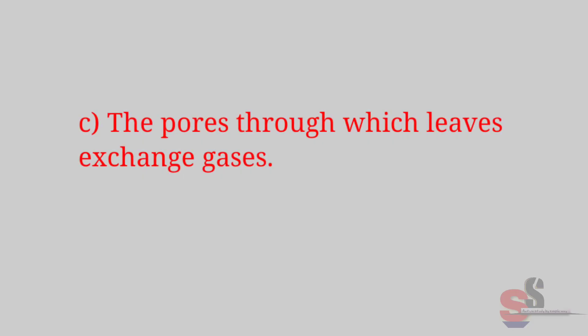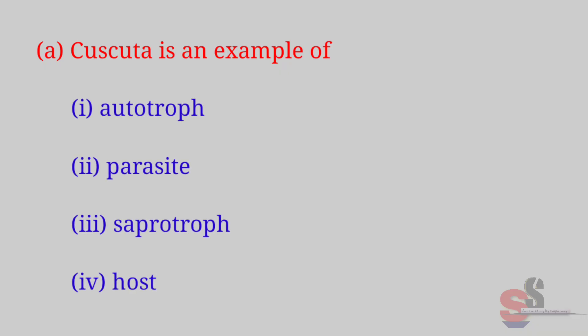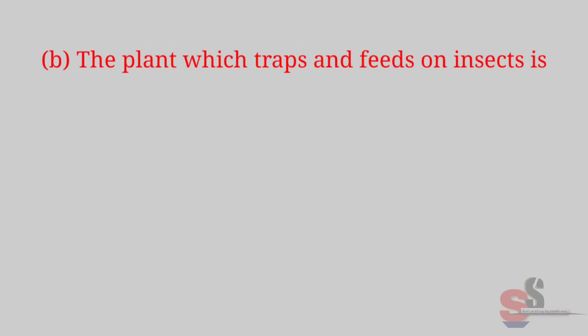Question 8: Tick the correct answer. (a) Cuscuta is an example of: autotroph, parasite, saprotroph, host. Right answer is parasite. (b) The plant which traps and feeds on insects is: Cuscuta, china rose, pitcher plant, rose. Right answer is pitcher plant.